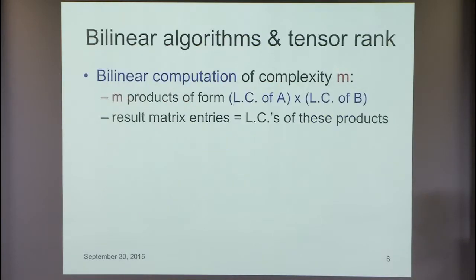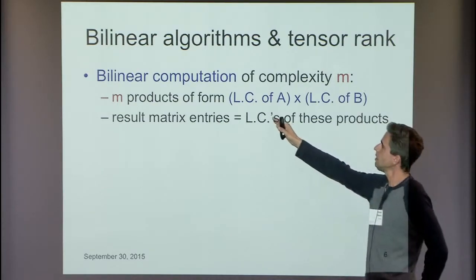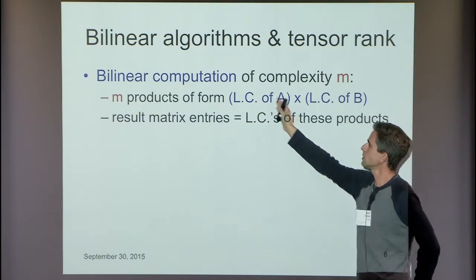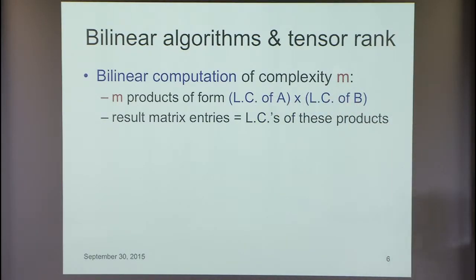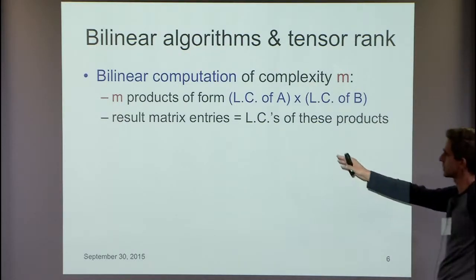Let me start at the very beginning. This is really a question about tensor rank. We can talk about a bilinear computation of complexity M—in the case of matrix multiplication, taking M different products of the form: some linear combination of entries of A times some linear combination of entries of B. Strassen's algorithm fits that framework, and it's a natural way to compute a matrix product because it is a collection of bilinear forms.